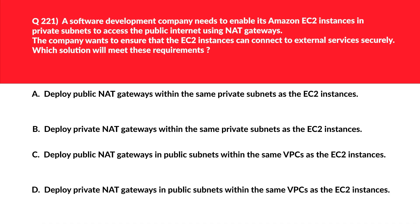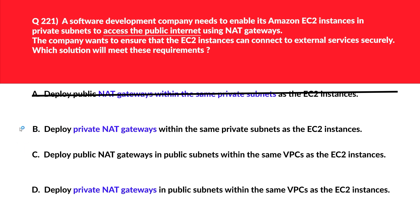Let's look at some questions related to networking. Option A asks: deploy public NAT gateways within the same private subnets as the EC2 instances. We know that NAT gateways cannot be placed in a private subnet, so that's instantly incorrect.